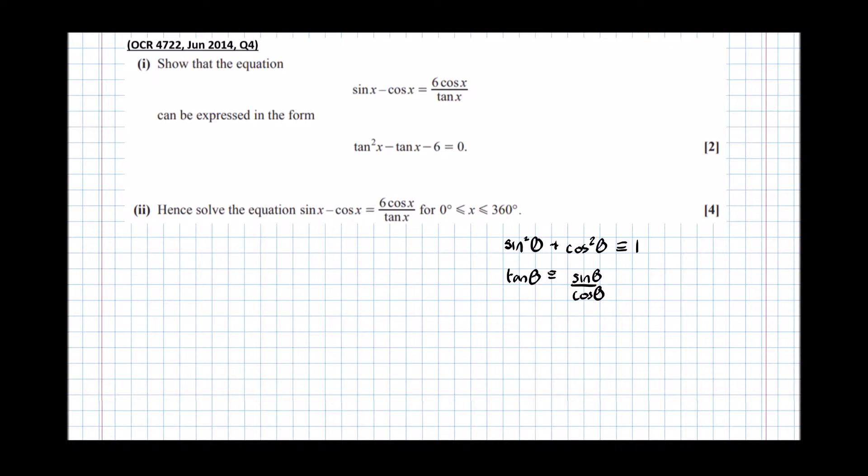So the question says, show that the equation sin x minus cos x equals 6 cos x over tan x can be expressed in that form there.